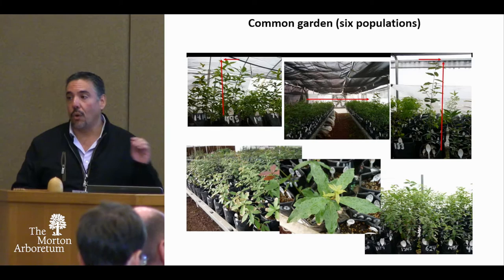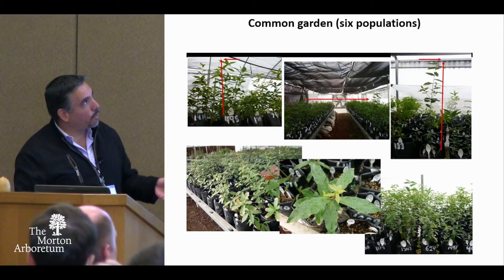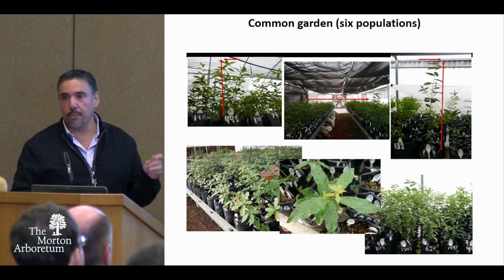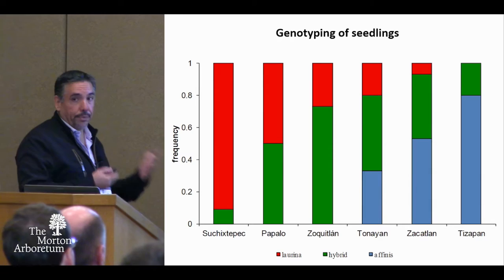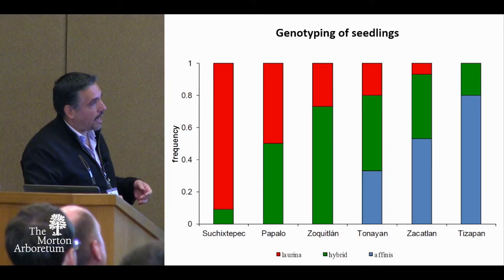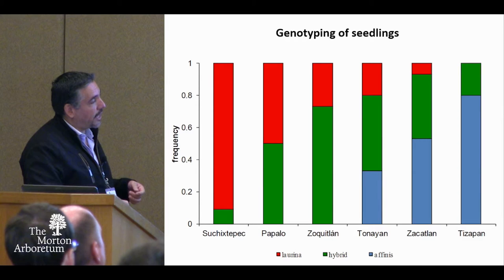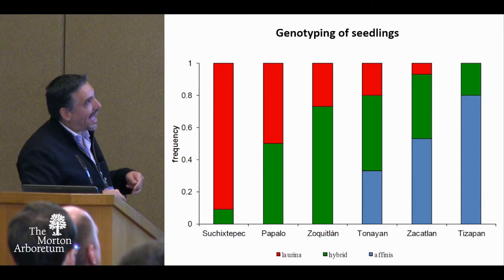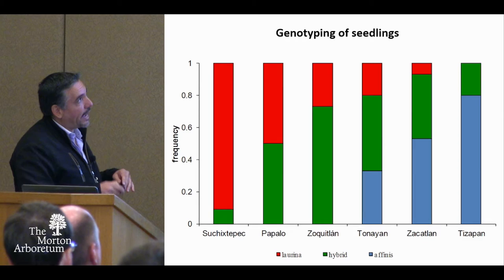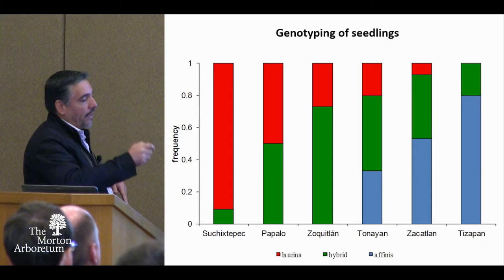To look at this more closely, we planted all the acorns we had measured and did a common garden experiment with six populations — unfortunately we could not get enough plants from one pure Quercus laurina population. After all the seedlings germinated, we genotyped them. The pure Laurina population showed almost all individuals as pure Laurina. The three contact zone populations had a high proportion of hybrids, and particularly the population right in the middle of the hybrid zone was dominated by hybrids with a few pure Laurina individuals. The more northern populations had more affinis individuals.